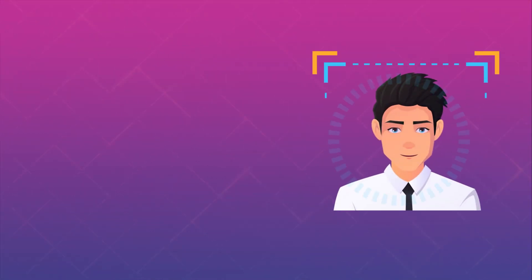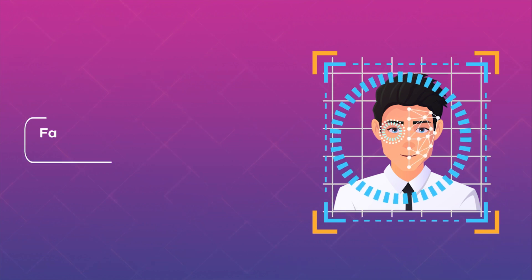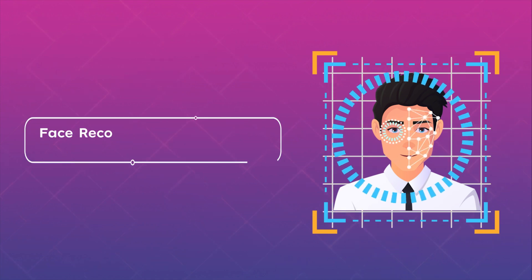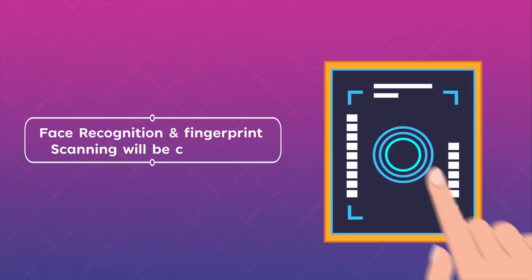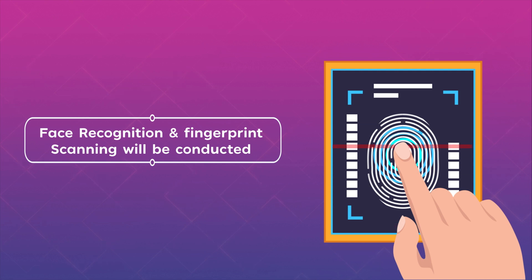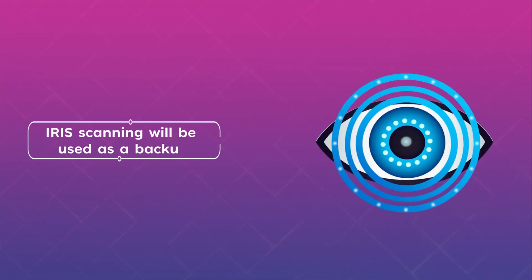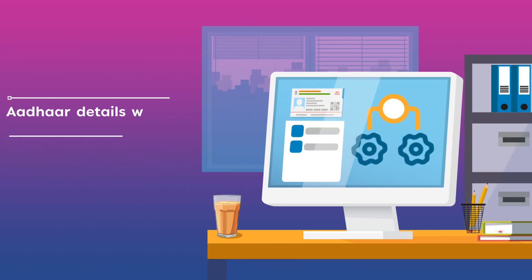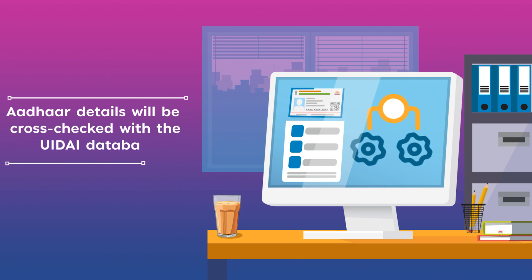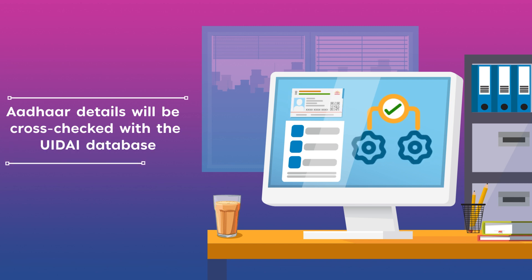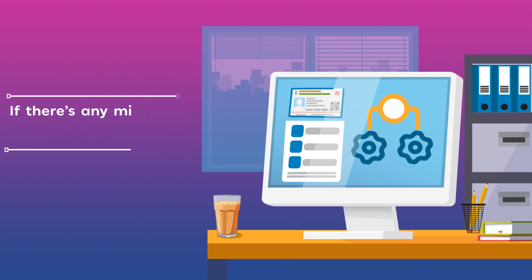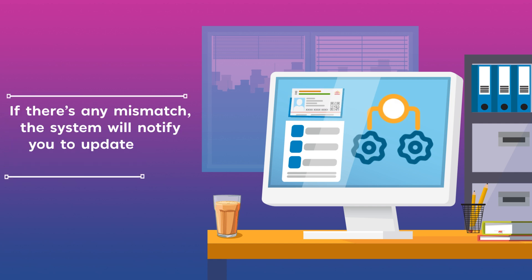The biometric authentication officer will conduct face recognition and fingerprint scanning. If fingerprint scanning fails, iris scanning will be used as a backup. Your Aadhaar details — name, date of birth, and gender — are then cross-checked with the UIDAI database. If there is any mismatch, the system will notify you to update your Aadhaar details.